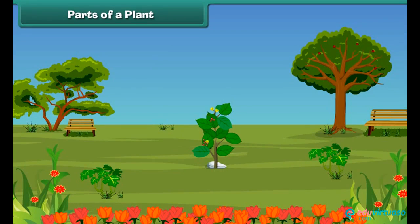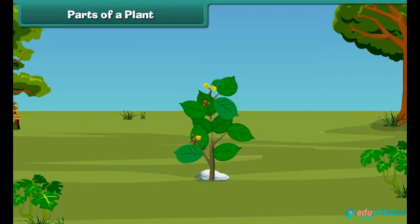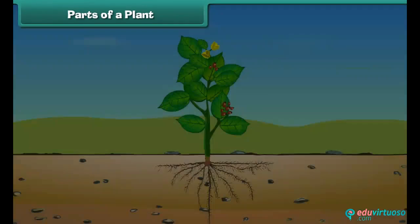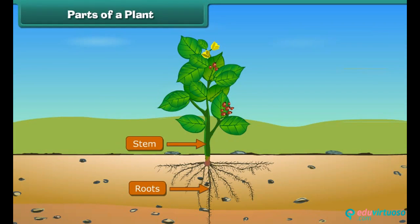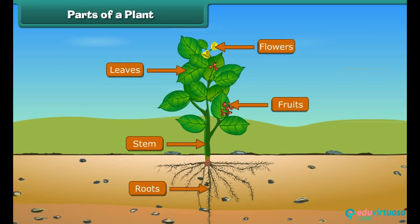Let us discuss the various parts of a plant. The main parts of a plant are roots, stem, leaves, flowers, and fruits. Let us know them one by one in more detail.